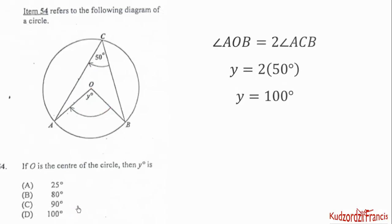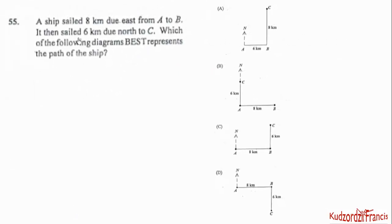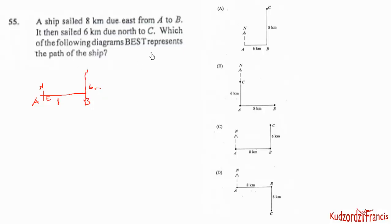Item 55: A ship sailed 8 kilometers due east. Let's say the ship started here at point A — 8 kilometers due east brings us to point B. Then it sailed 6 kilometers due north, reaching point C. So the path is: 8 kilometers east first, then 6 kilometers north. The correct answer representing this path of the ship is option C.